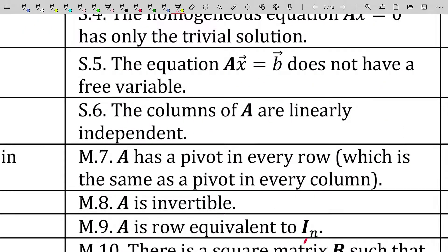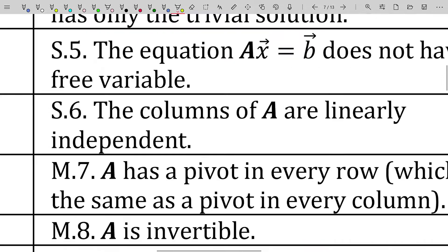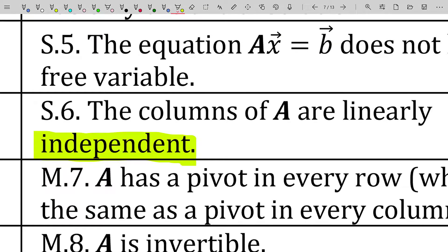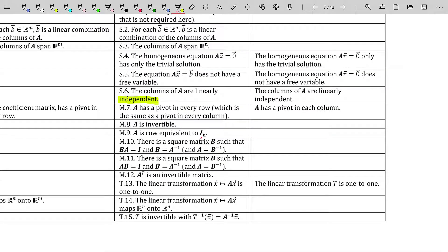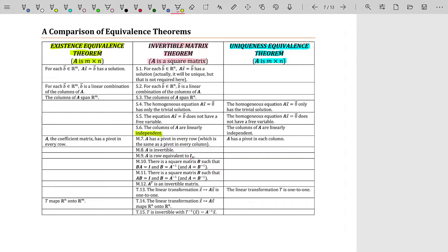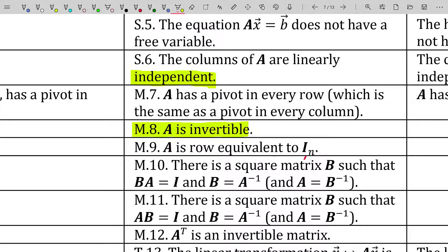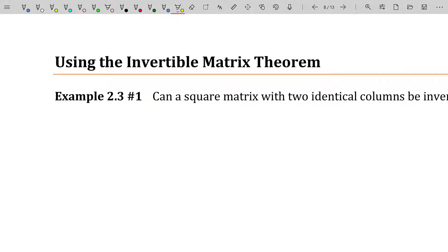If you look through the list — and we know from working with linear algebra, a long time being probably about a month — that linear dependence of columns is a precursor to a lot of results with theorems. Specifically, the columns of A being linearly independent means all of that information, S1 through T15, would all be true. But we know these columns are linearly dependent, so everything in that column is false — specifically, the statement that A is invertible. That's how we go about this: what does it mean to have two identical columns, and what does that mean for the resulting matrix? Now let's formalize that statement.